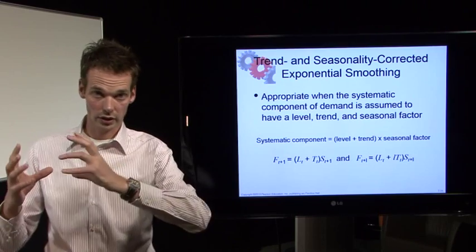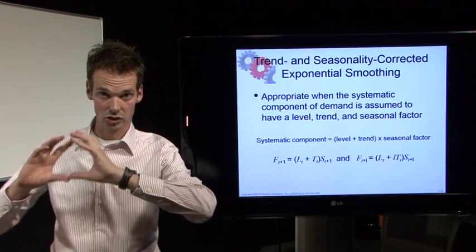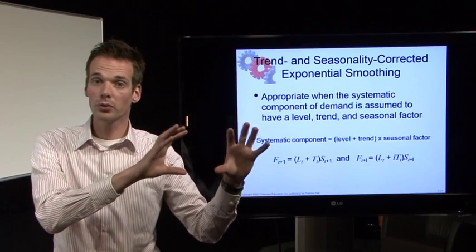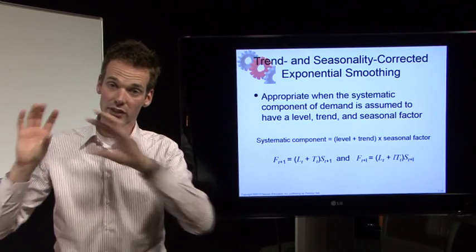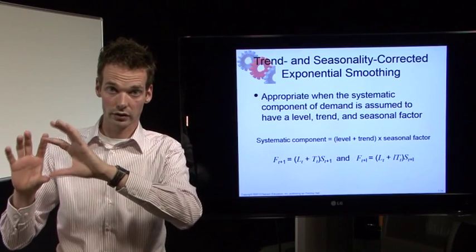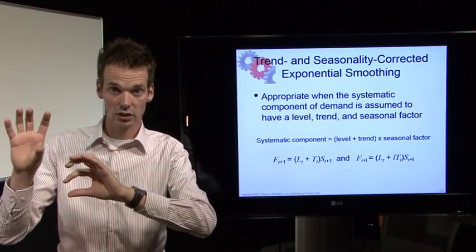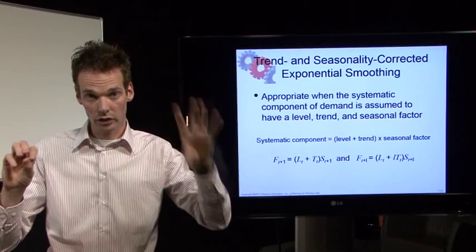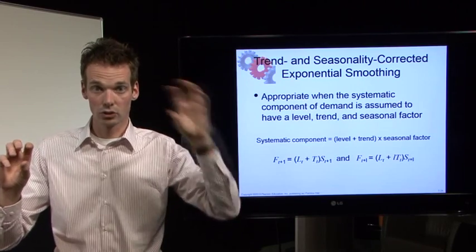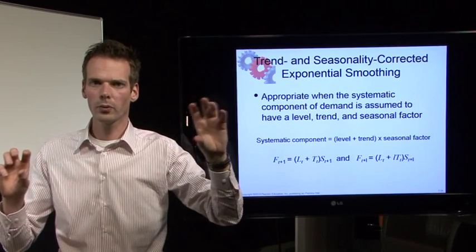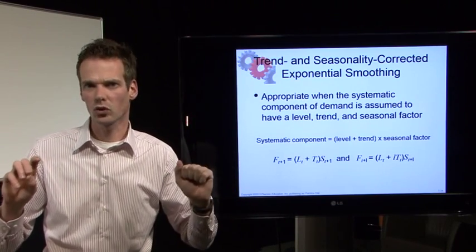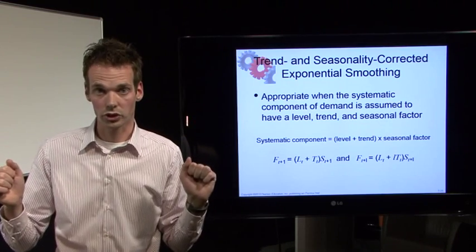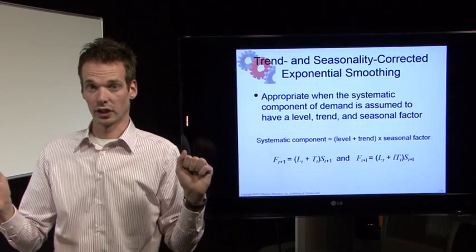Recall that in a forecast we have a systematic component and a random component. We only forecast on the systematic component and not on the random component. The random component itself will be the forecast error, which we will come across in later videos.